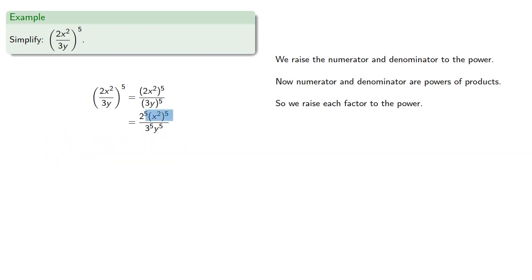Now we have this x to the second to the fifth, which is a power of a power, so we multiply the exponents. We can leave our two to the fifth and three to the fifth as they are, or we could multiply them out. It doesn't make a difference.